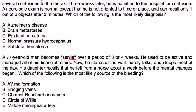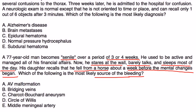Vignette 2: A 77-year-old man becomes senile over three to four weeks. He used to be active and managed his financial affairs, but now stares at the wall, barely talks, and sleeps most of the day. His daughter recalls he fell from a horse about a week before the mental status changes began. Classic presentation — blunt trauma to the head, he was okay, then three to four weeks later gradual neurologic deterioration. The source of bleeding is the bridging veins in the dura, which ruptured and led to a subdural hematoma.